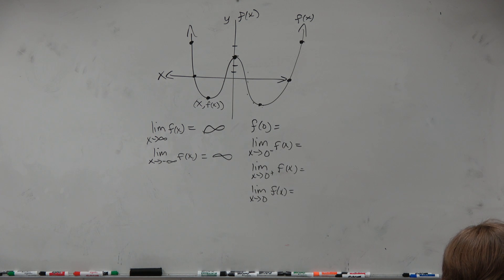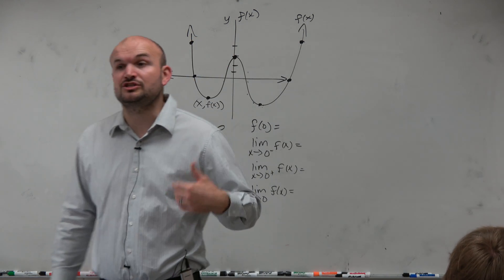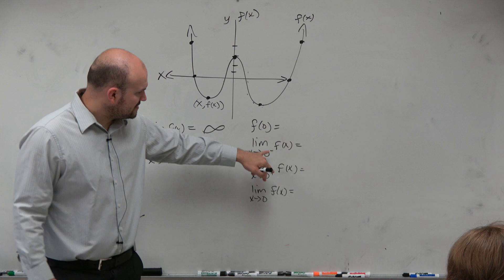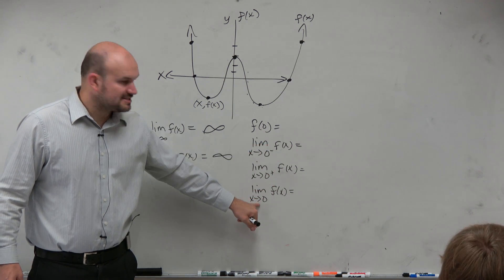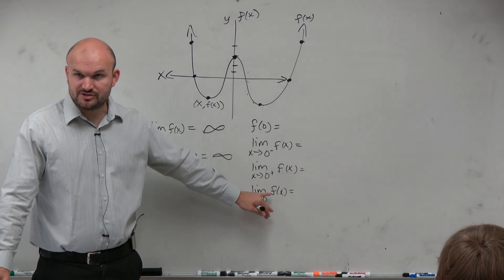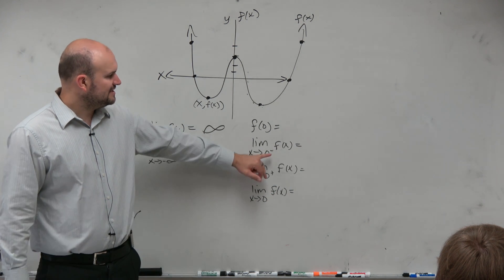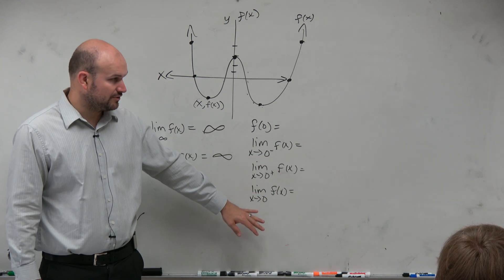The next one we looked at was the limit of a graph. We talked about this actually with rational expressions. What I'm going to deal with is talking about limits from the left, right, and the general limit. You'll see there's a little minus, a little plus, and a little zero — and just a regular zero. So this is what we call the left hand, the right hand, and the general limit.